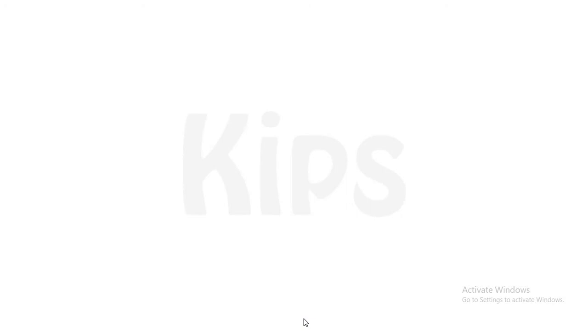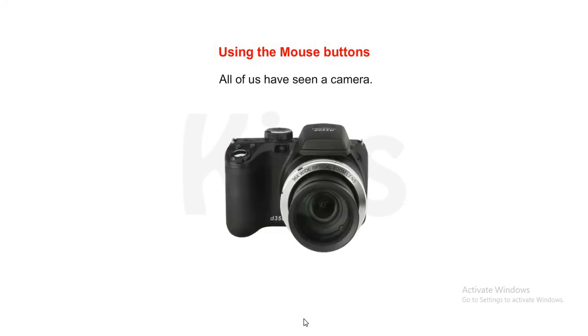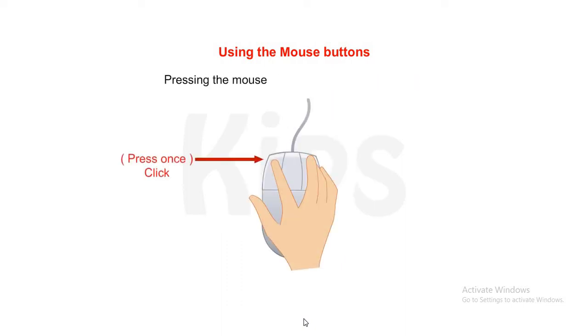Okay children, let me now tell you how to use the mouse buttons. All of us have seen a camera. What would you say to your parents if you want to take their photograph? Let me click your photograph. The mouse also has the same function. Clicking. Pressing the mouse button once is called clicking. This selects an item. Press once. Click.